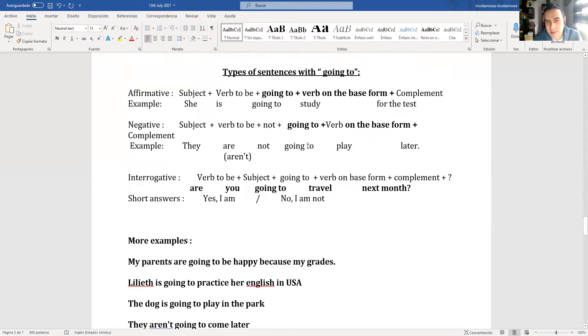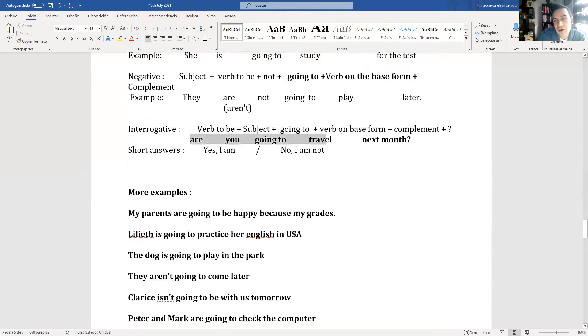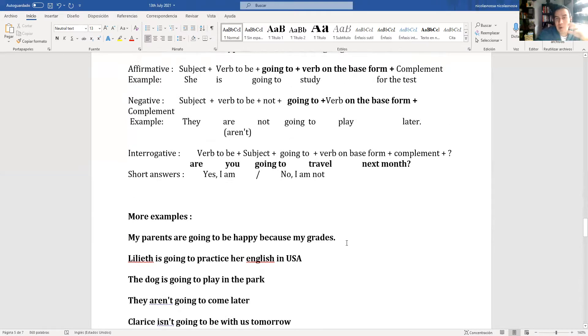They are not going to play. Interrogative: Are you going to travel next month? Vas a viajar el próximo mes? Yes I am. No I am not. That is the difference. Will predicts what you think the future will be. Going to is for sure plans, what you're going to do this weekend.